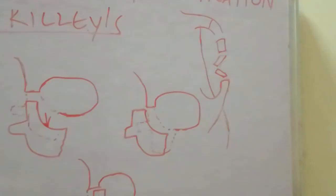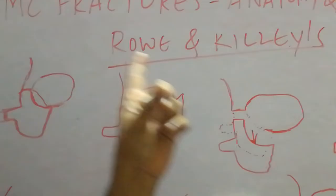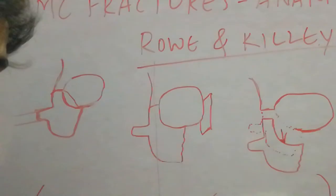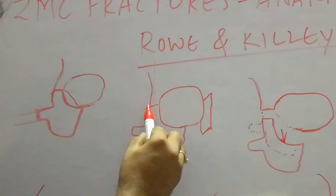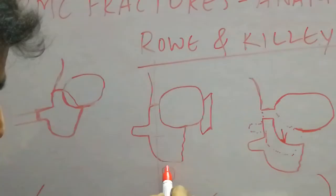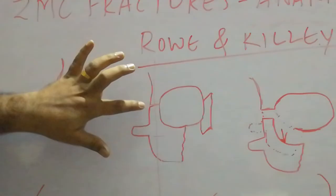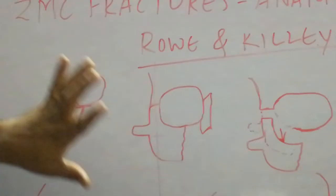Type 3 is fractures rotated around the vertical axis. The vertical axis is the line passing through the frontozygomatic suture, body of the zygoma, zygomatico-maxillary buttress inferiorly, and through the maxillary first molar. The horizontal axis passes through the inferior orbital rim and the zygomatic arch. We will first discuss fractures rotated around the vertical axis.